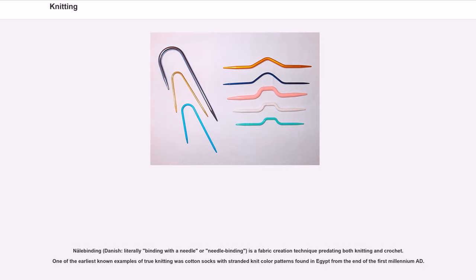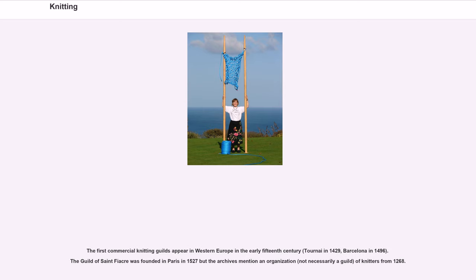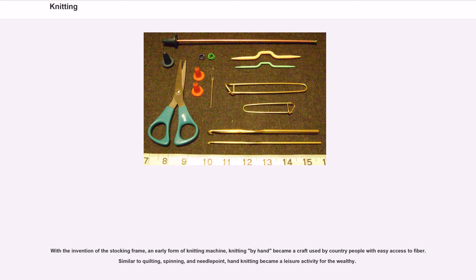The first commercial knitting guilds appear in Western Europe in the early 15th century — Tournai in 1429, Barcelona in 1496. The Guild of St. Fiacre was founded in Paris in 1527, but the archives mention an organization of knitters from 1268. With the invention of the stocking frame, an early form of knitting machine, knitting by hand became a craft used by country people with easy access to fiber. Similar to quilting, spinning and needlepoint, hand knitting became a leisure activity for the wealthy.